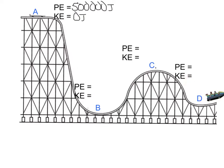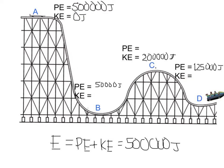Let's see how those different types of energy vary along the trip. The total energy is the sum of potential and kinetic, equal to 500,000 joules at point A. Can you fill in the missing energies at points B, C, and D? What's the kinetic energy at B if the potential energy is 50,000 joules? What's the potential energy at C if the kinetic energy is 200,000 joules? What's the kinetic energy at D if the potential energy is 125,000 joules? Take a moment to calculate.